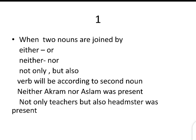Rule number one: when two nouns are joined by either/or, neither/nor, or not only/but also, the verb always comes according to the second noun. If the second noun is singular, a singular verb will be used. If the second noun is plural, a plural verb will be used.